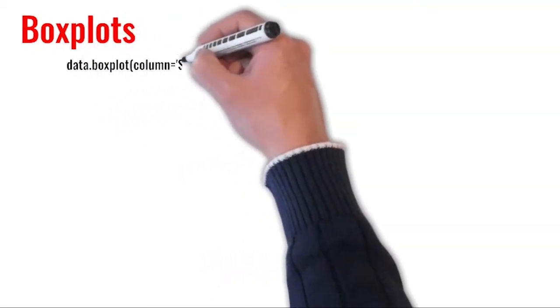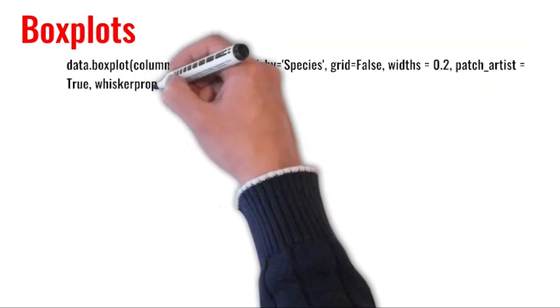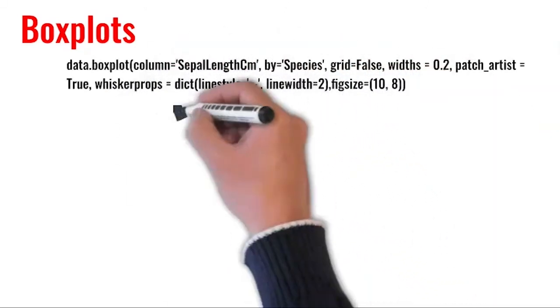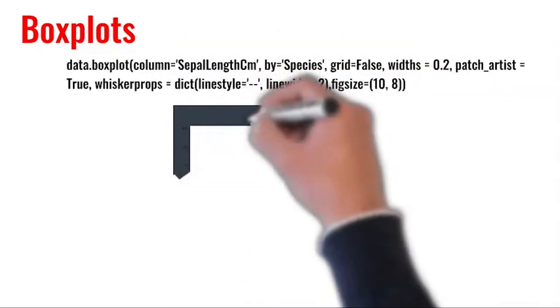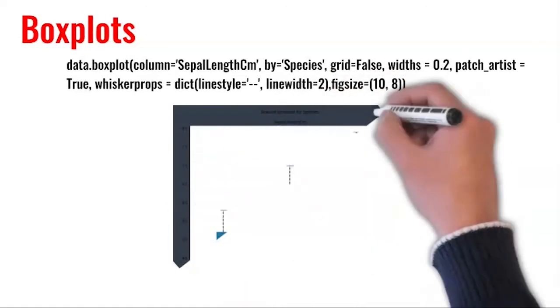To make a BoxPlot of sepal length for all the species and then compare, we can use the command shown here. There are some optional arguments, but the main command can be a very simple one.